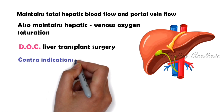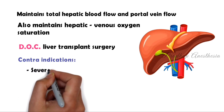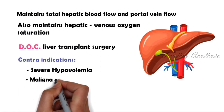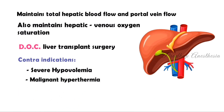Contraindications: isoflurane should not be used during severe hypovolemia, because in a hypovolemic patient who already has low blood pressure, administering isoflurane would further decrease blood pressure and worsen the condition. Isoflurane is also not to be used during malignant hyperthermia, because isoflurane has a triggering effect on hyperthermia.